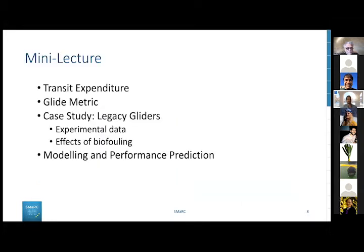Let's look at what this lecture is going to contain. We'll briefly look at how transit expenditure can be defined, look at the glide metric which we use to compare the transit efficiency of the two different kinds of vehicles, then look at a case study where we analyzed the legacy gliders: Slocum, Spray, and Sea Glider. We'll look at experimental data, the effects of biofouling, and also at how the modeling and performance prediction can look.